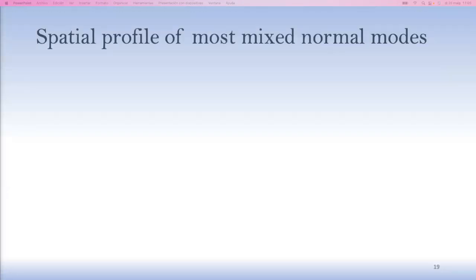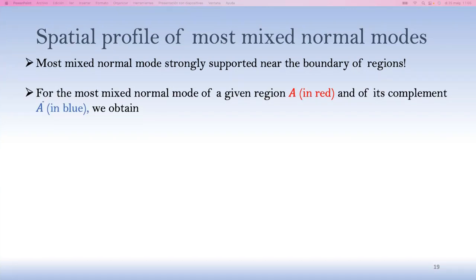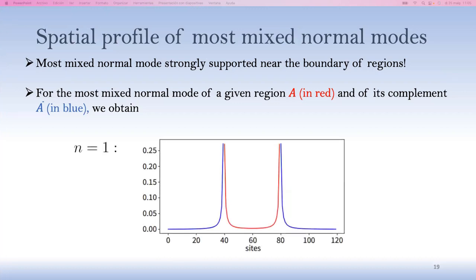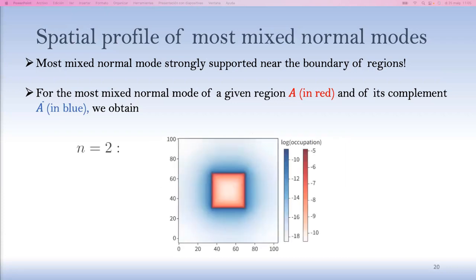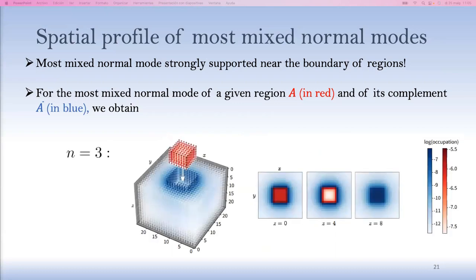Now, to illustrate this a bit further, we can look at a spatial profile of the most mixed normal mode. And it turns out, unsurprisingly perhaps, that the most mixed normal mode is strongly supported near the boundary of the regions. Again, this should not come as a surprise. After all, the interaction comes from nearest neighbor coupling. So for the most mixed normal mode of a given region A that I'm going to illustrate in red, and its complement A bar in blue, this is the kind of shape that we're going to look at. So we see that it's most strongly supported near the boundaries. Here's the result in two dimensions, again. And in three dimensions, the same behavior happens. Here I'm representing this. Each slice here is a 2D slice of this 3D region in the upper cap and in the lower cap here. So this is a general trend that you're going to find.